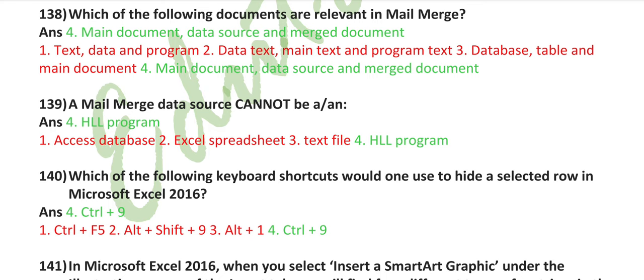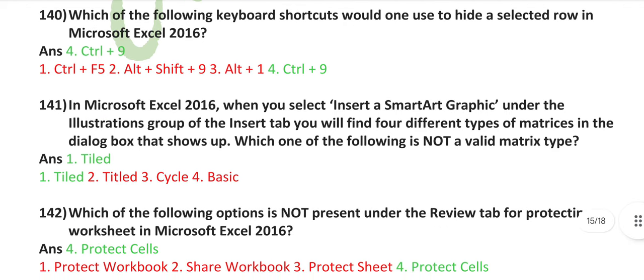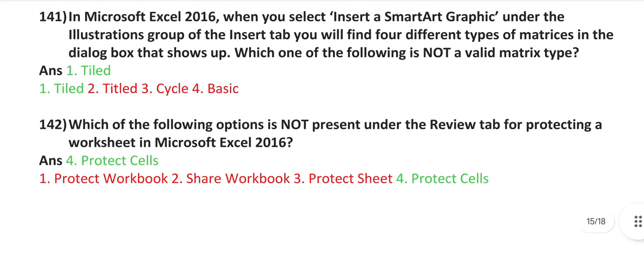Which of the following documents are relevant in mail merge? Main document, data source, and merge document. A mail merge data source cannot be an HLL program. Which of the following keyboard shortcuts would one use to hide a selected row in Microsoft Excel 2016? Control plus 9. In Microsoft Excel 2016, when you select insert a smart art graphic under the illustrations group of the insert tab, you will find four different types of matrices in the dialog box that shows up. Which one of the following is not a valid matrix type? Tiled.